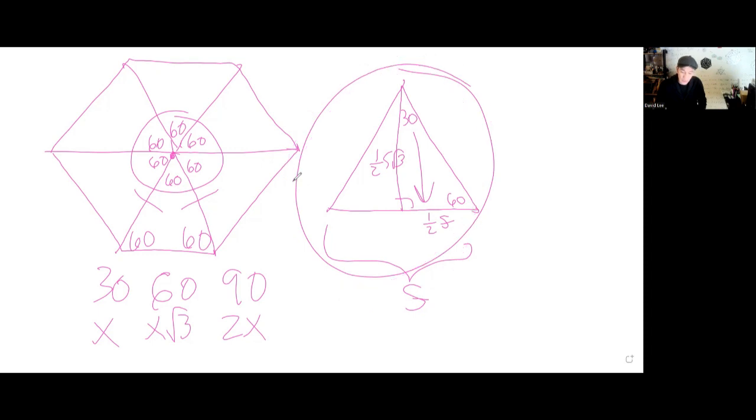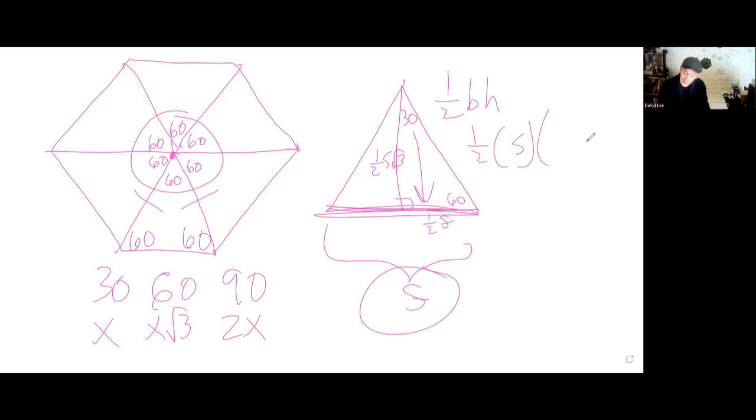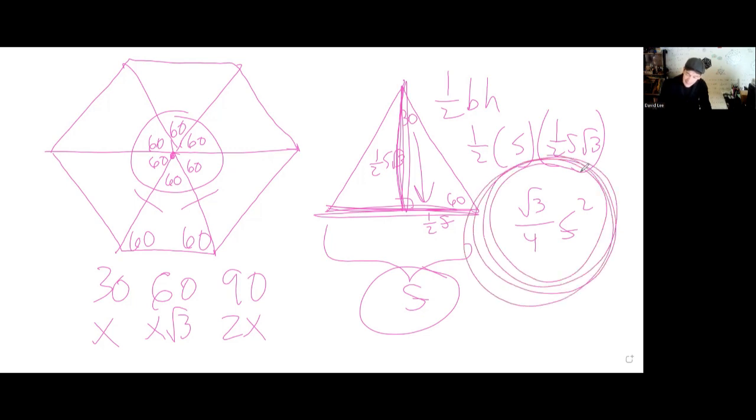The area of this triangle would be 1 half base times height. 1 half is 1 half. The base would be all of this, which is S. And the height, the altitude, would be this guy, which is 1 half S square root 3. 1 half times 1 half times square root 3 is square root 3 over 4. S times S is S squared. Which is why, if you Google, area of equilateral triangle, Google will say this, I guarantee it.